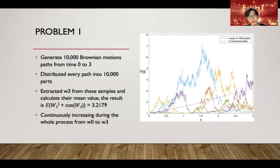Furthermore, we plot the first 5 paths of our 10,000 samples. On the right hand side, here is the graph that we got from the code. From there, we can see that the expected value is continuously increasing during the whole process.